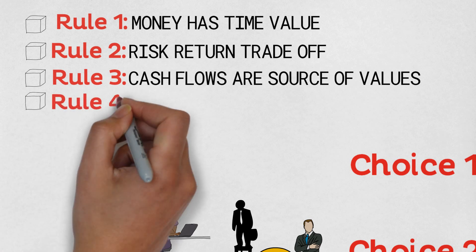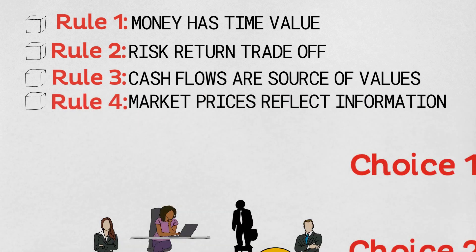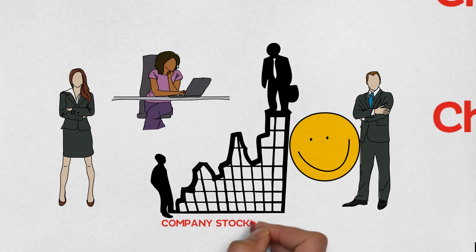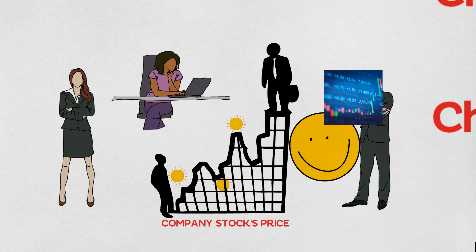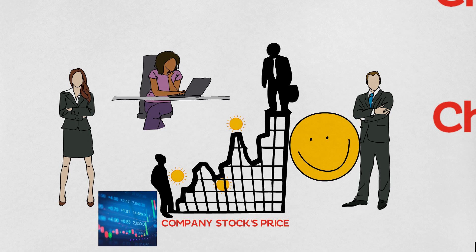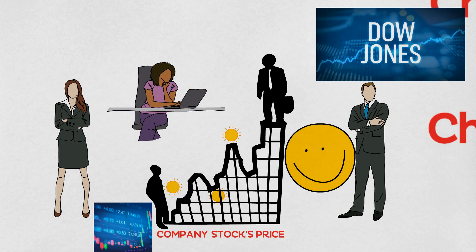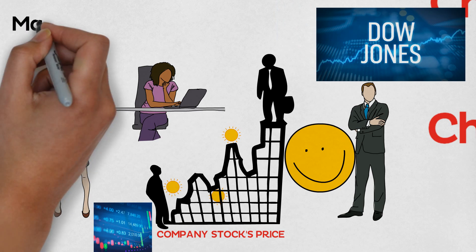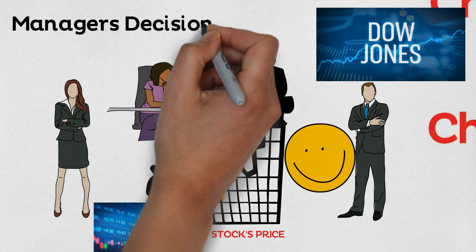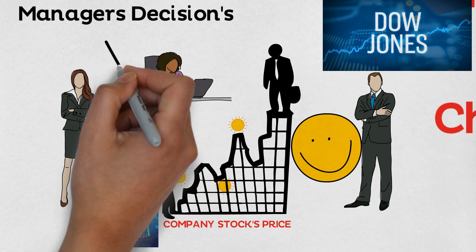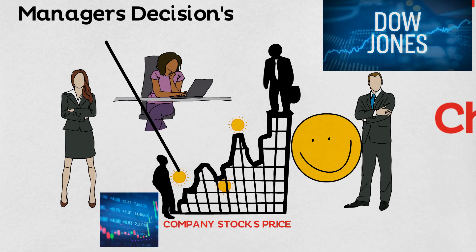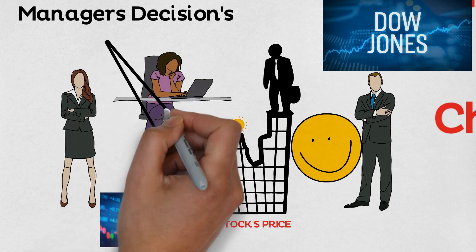Rule number four: market prices reflect information. This is more applicable to a public company, meaning information is available via secondary research on a public domain. If you watch the stock market, as soon as companies' earnings come out, the stock rises or falls accordingly. As per the Financial Management book by Titman et al., managers can expect their company's share prices to respond quickly to the decisions they make. A good decision will result in higher share prices; a poor decision will result in lower share prices.